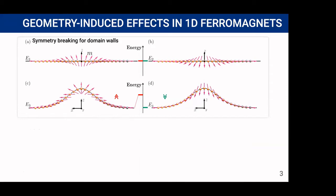Basically, the simplest object to display the interplay between geometry and magnetic structure is domain wall. Let's consider a straight magnetic wire with easy tangential type of anisotropy. In such system, these two domain walls have equal energy.